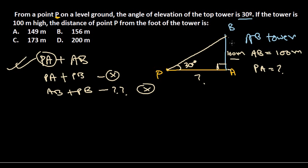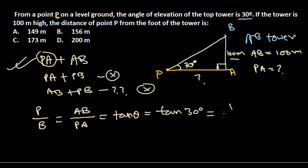What kind of formula involves perpendicular and base? The answer is tan theta. The formula is tan theta equals perpendicular by base. So AB is the perpendicular, base is PA, equals tan theta. Tan 30 degrees equals one by root 3. This thing you need to memorize. Then PA is going to be root 3 times AB.